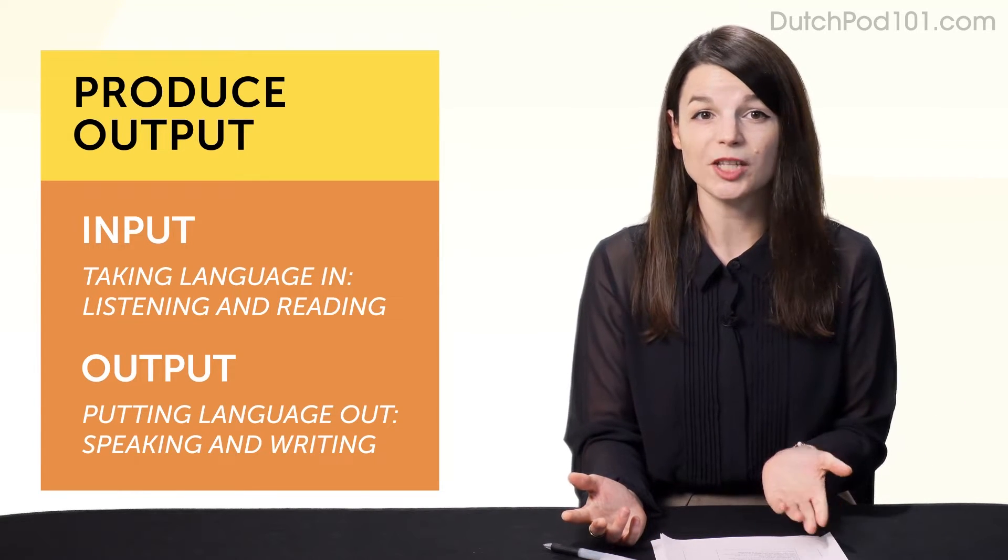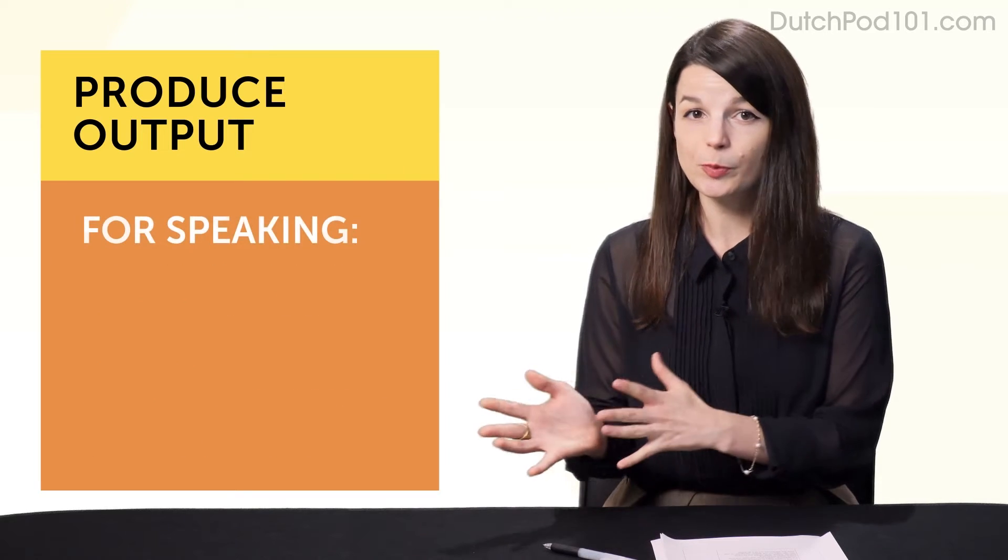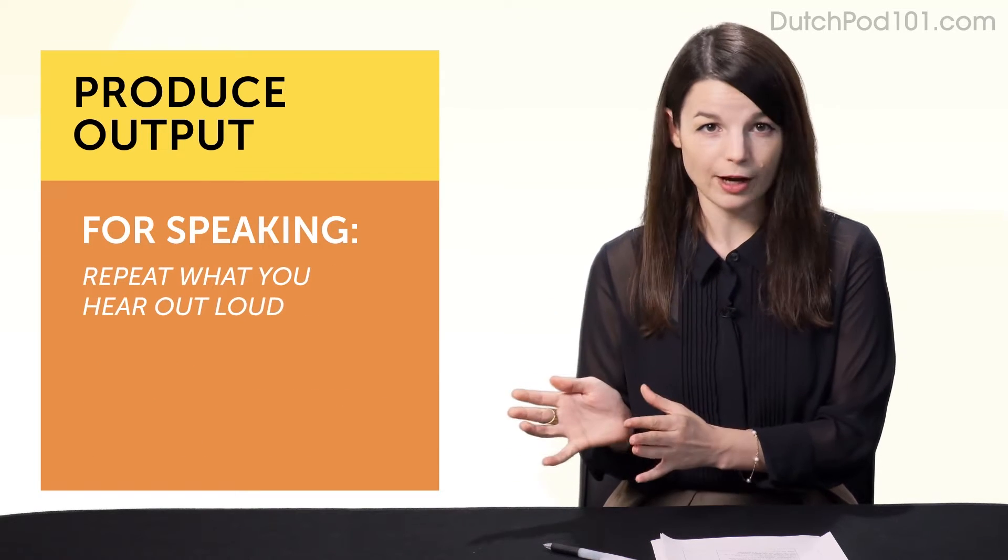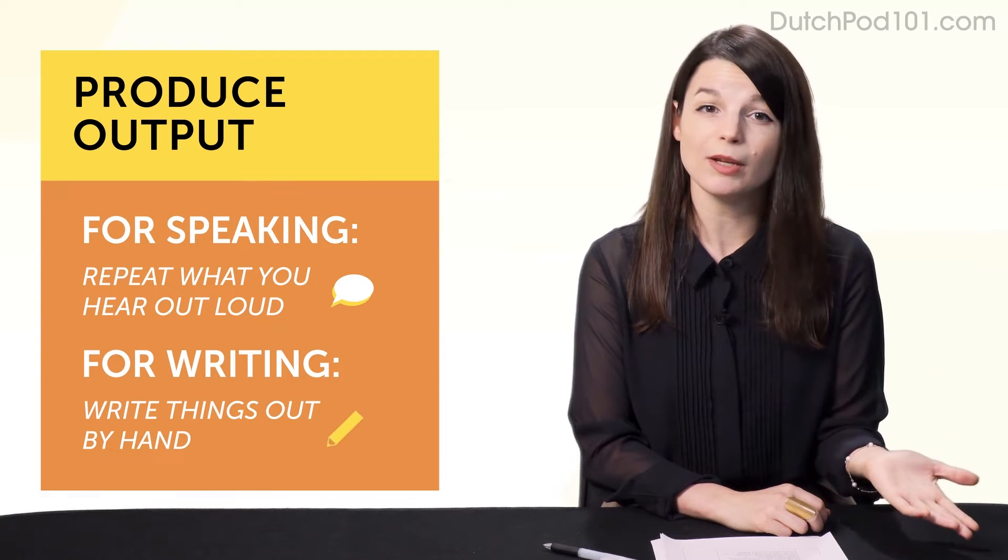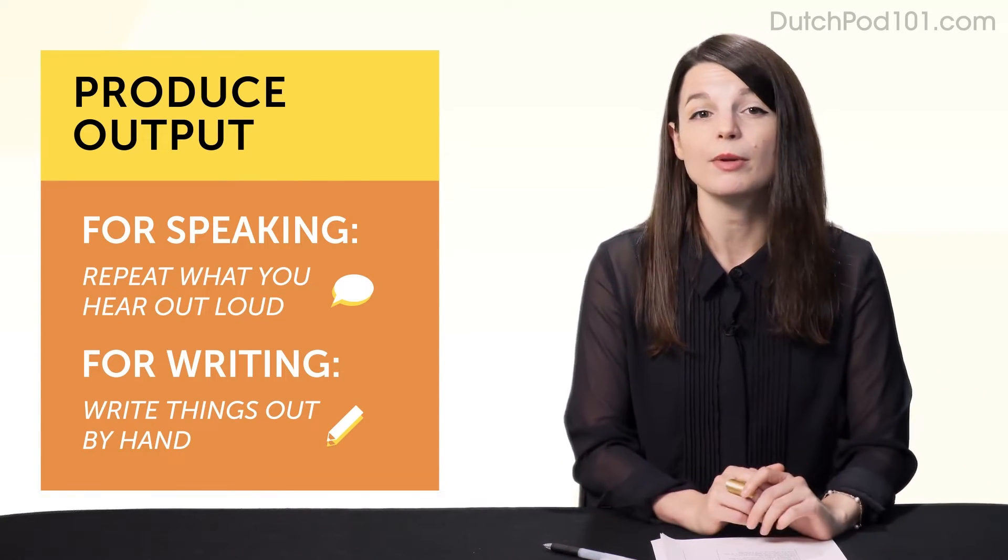So the easiest ways to produce output are, for speaking, repeat what you hear out loud. That's called shadowing. And for writing, write things out by hand. You can copy out our lesson dialogues or just copy the sentences out of a textbook.